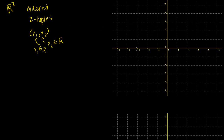Just to give you a sense of what that means: if this is my coordinate axes and I wanted to plot all my x1's and x2's, you could view the first coordinate as the x-axis and the second coordinate on the vertical axis. You could visually represent all of R2 as literally every single point on this plane continuing off to infinity in every direction. R1 would just be points along one number line. So R2 is a bigger space. Anyway, let's get some vectors going in R2.